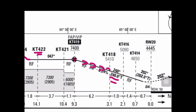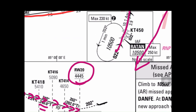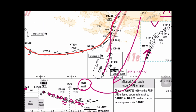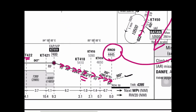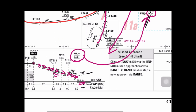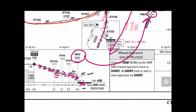A heading in true degrees is given for you to fly. You slowly descend until reaching the decision altitude. At the decision altitude, if you cannot see the runway, you must initiate a go-around. The decision altitude is referenced at 5,000 feet.